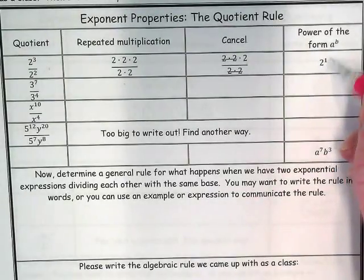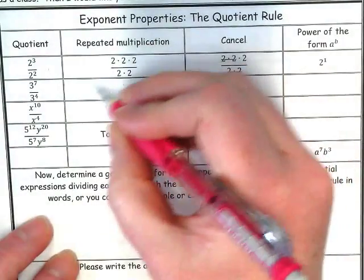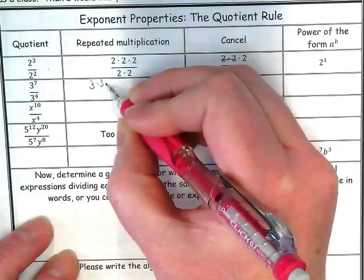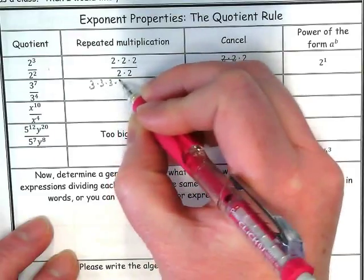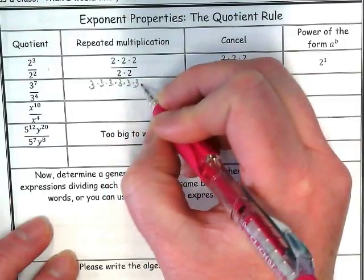Let's try that with the second example. Our numerator would have how many 3s in it? Seven of them - one, two, three, four, five, six, seven.